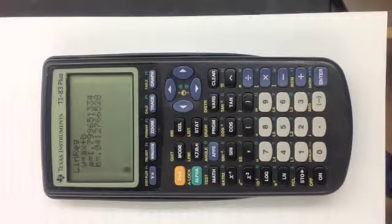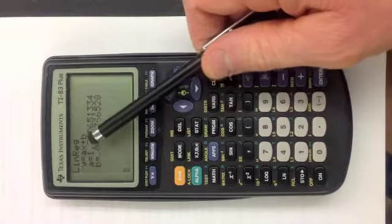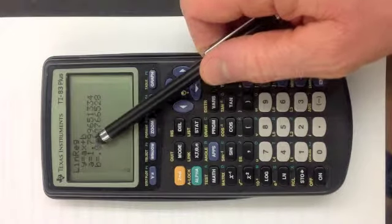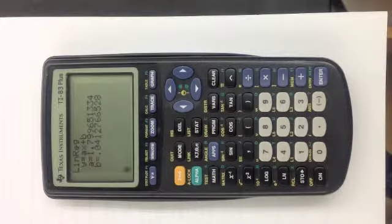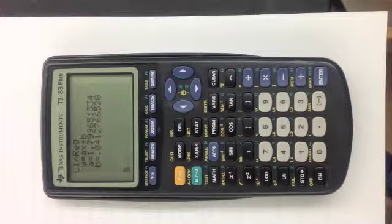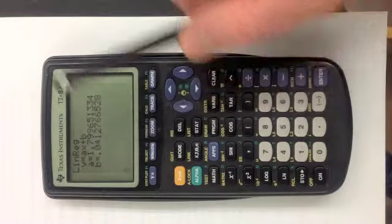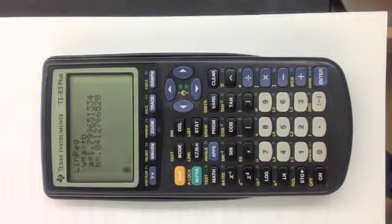and those are my values. It tells me my formula is y equals ax plus b. My a, my slope, is 1.799, which, if you look in my notebook, I round it to 1.80, and my y intercept is 0.0412, so on and so forth.